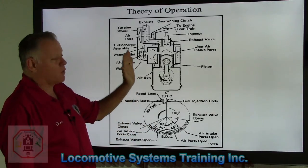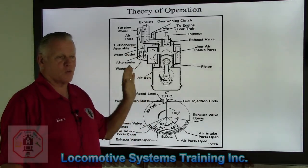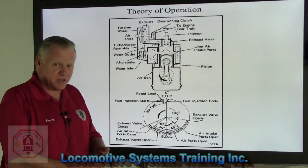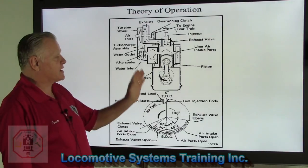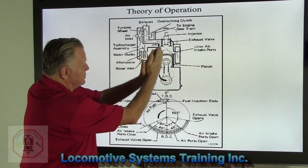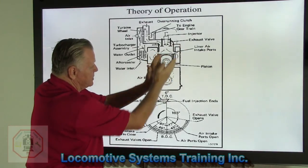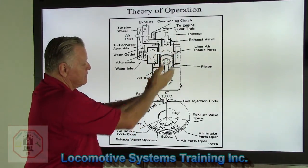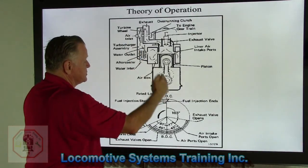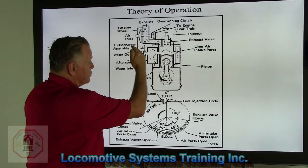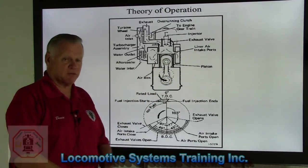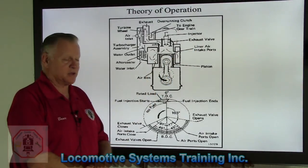This is only a one-cylinder engine we're looking at. In reality we have V12s, V16s, V20s — a V configuration. At the center line of this engine, you would have 22.5 degrees from center to the center line of the left bank, and 22.5 degrees off center to the center of the right bank. That adds up to a total of 45 degrees — that's the configuration of this engine.